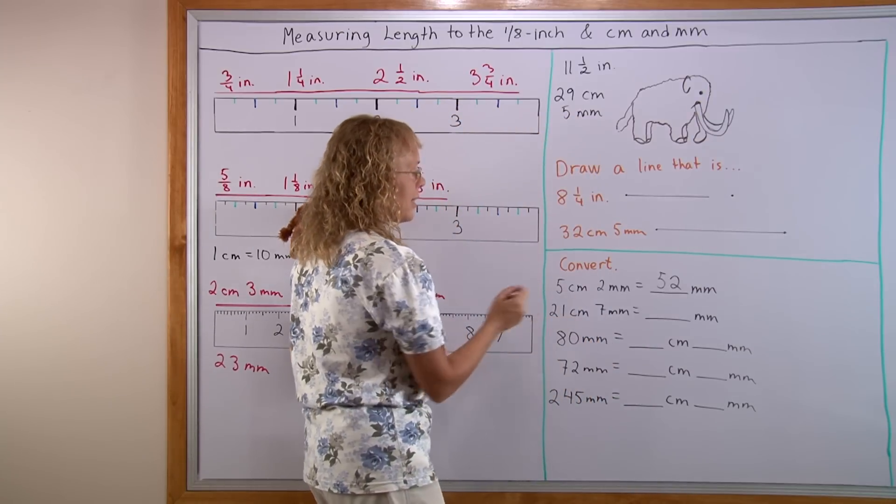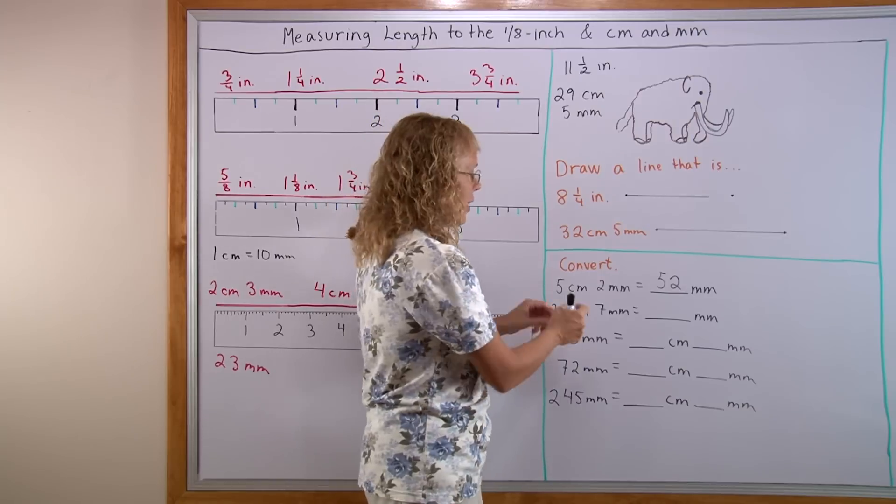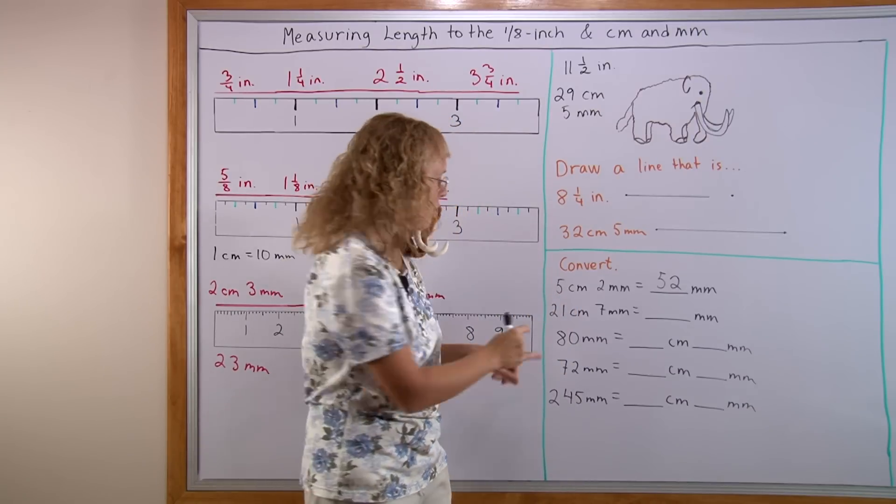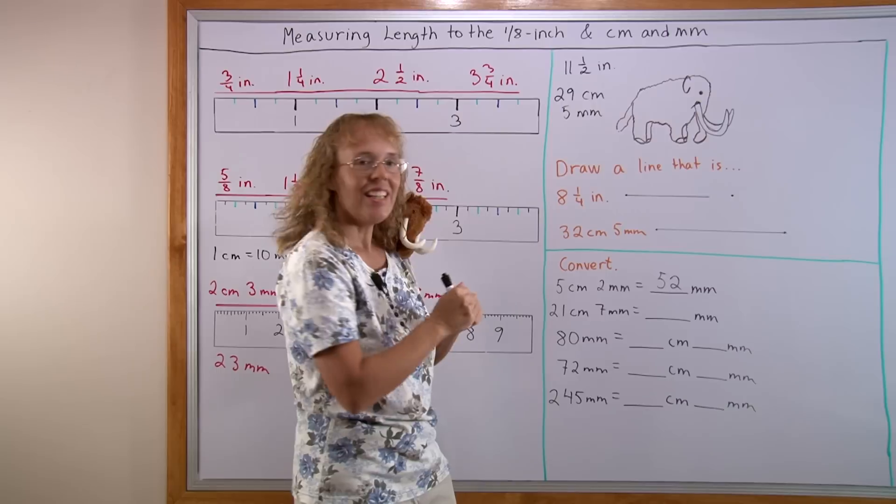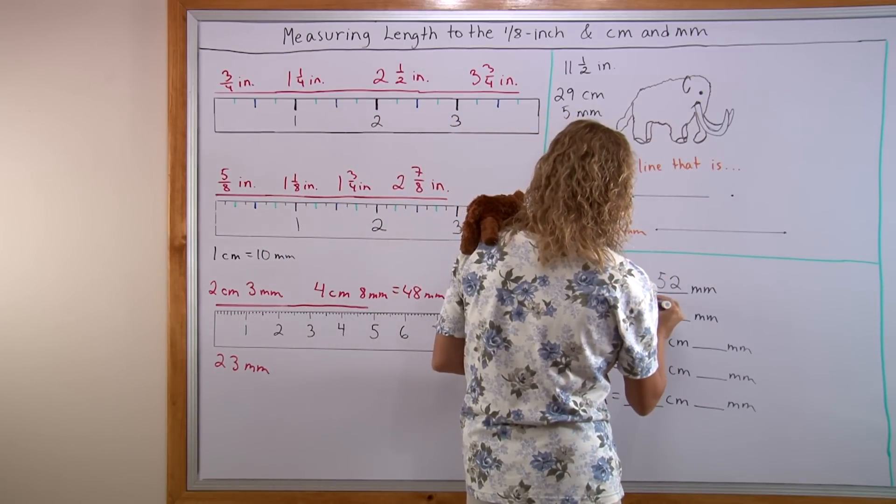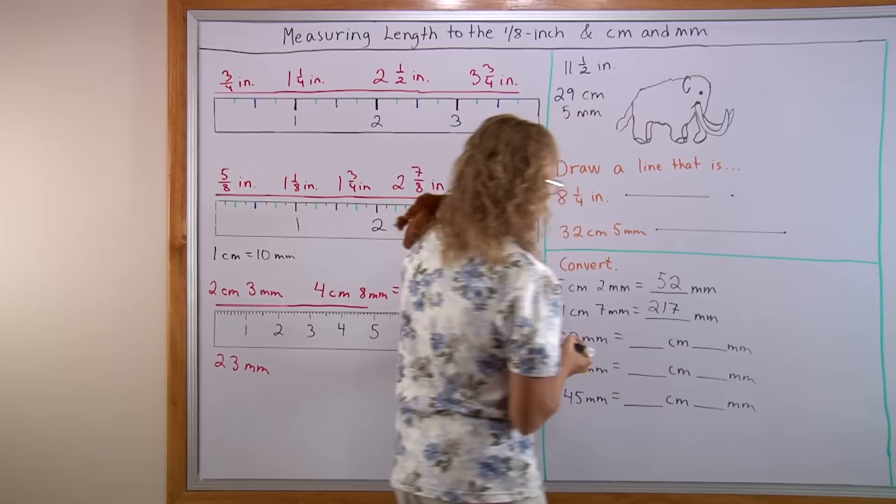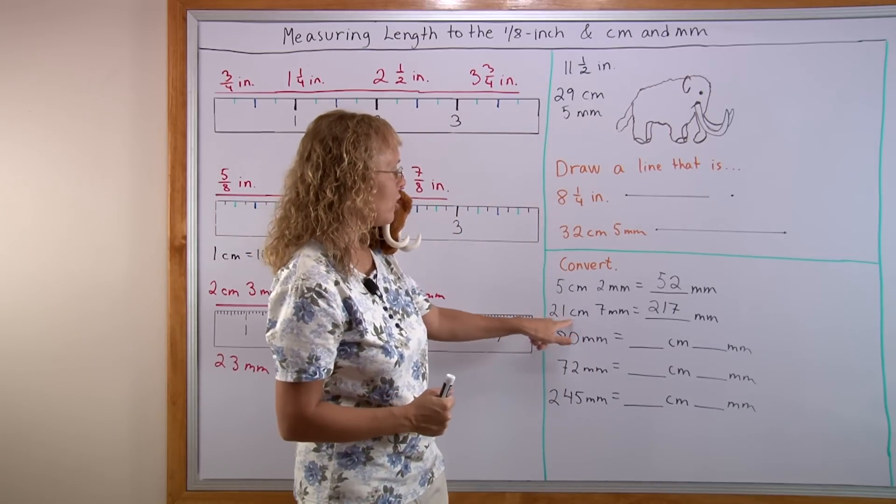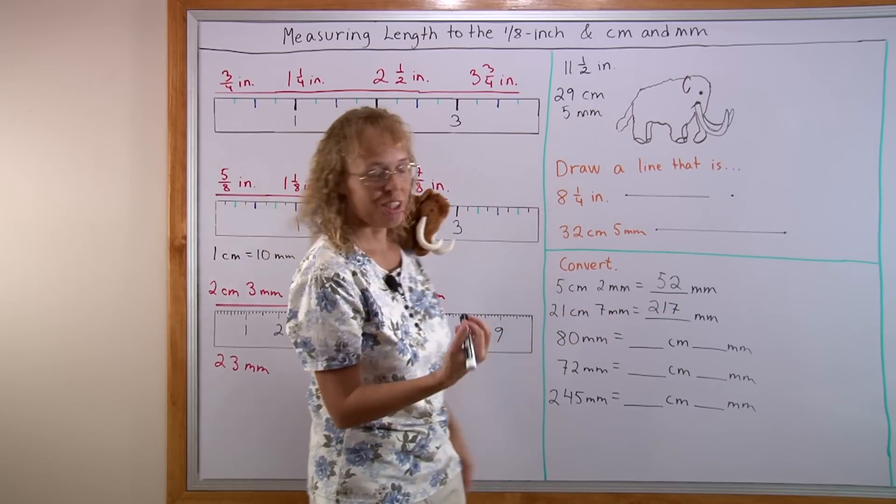And here 21 centimeters. Each centimeter is 10 millimeters. So I multiply this times 10. I get 210 millimeters and then 7 more. In fact, it is very easy. I just copy these digits 2, 1, 7 over there as a shortcut.